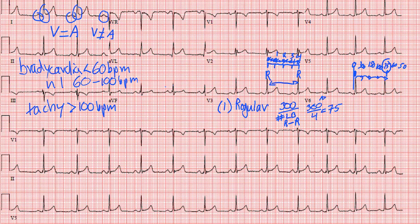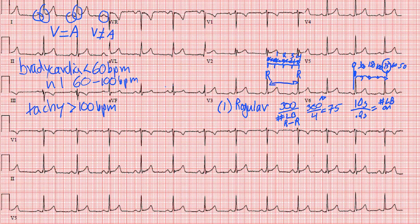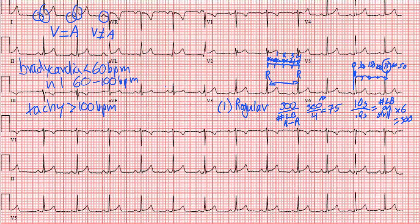Why does this work, and where does the number 300 come from? The total time of an EKG strip from start to finish is 10 seconds, and each large box is 0.2 seconds. That gives us 50 large boxes in 10 seconds. Since heart rate is measured over 60 seconds, you multiply by 6, which equals 300. So 300 is the number of large boxes in 60 seconds. We look at one R-to-R beat, count the large boxes in that beat, and divide 300 by that number to get beats per 60 seconds. This works for regular rhythms at a relatively normal rate.